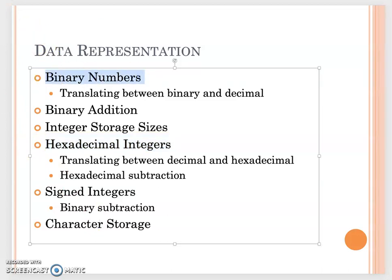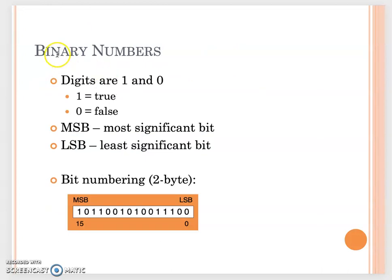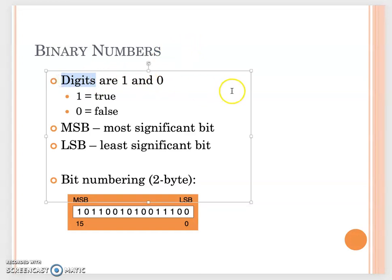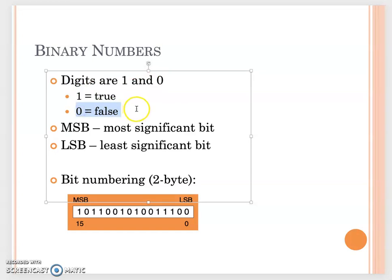Let's talk about what binary numbers are. Each byte has 8 bits, and each bit is a digit we want to represent. In the computer system, when we talk about binary numbers, each digit can only be 0 or 1. We use 1 to represent true and 0 to represent false.